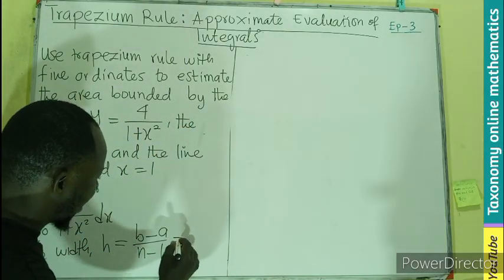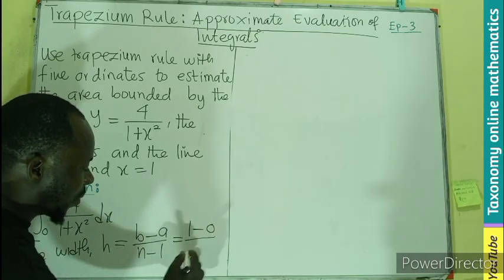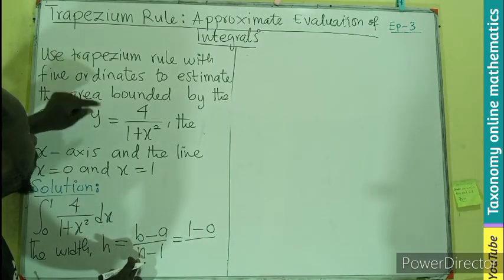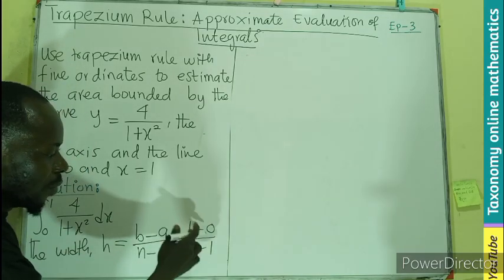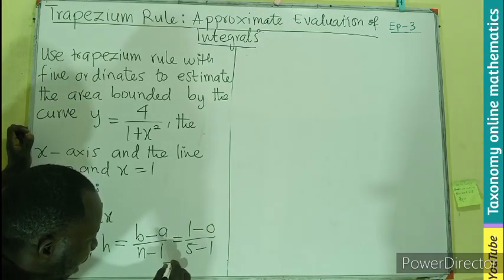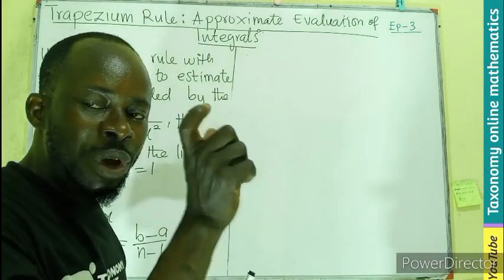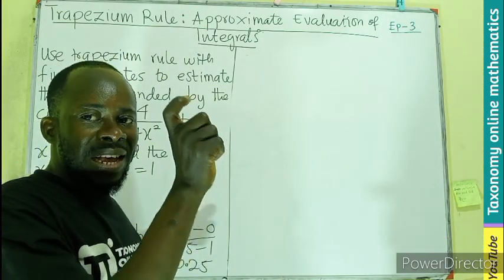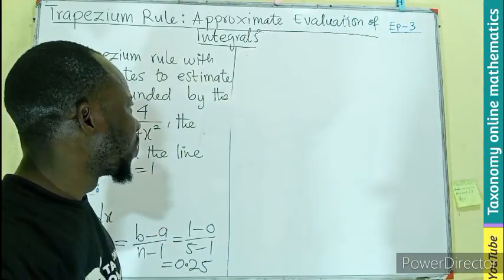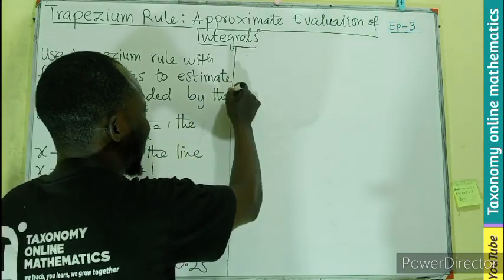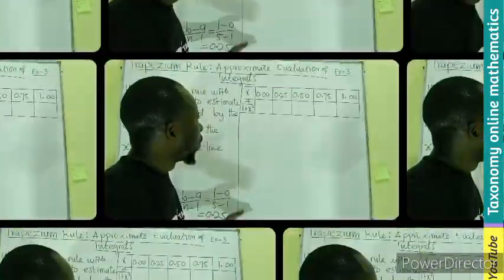So this can be calculated as: the upper limit is 1, lower limit is 0, number of ordinates is 5, minus 1, that will be 1/4, which gives us 0.25. So that is the width of the trapezium. Now let's generate a table and see how we can use this.